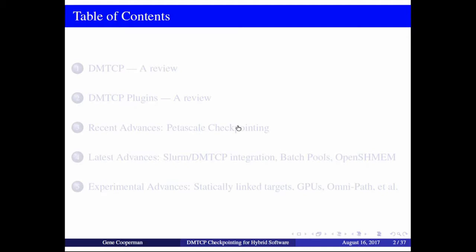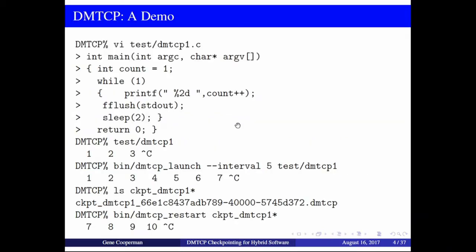And then we'll get on to some of the latest advances. The idea is really very simple. Rather than stop for a demo, here is your demo in a slide. We take a program that's going to print 1, 2, 3, and then run it under DMTCP, asking for a checkpoint interval every five seconds. We see it counting up to seven, then an interrupt. It creates a checkpoint image file — a copy of all memory plus various system state such as open files. When ready, we say restart. The seven got repeated, so the checkpoint must have happened between six and seven. It's quite fast, usually less than a second for a small program.